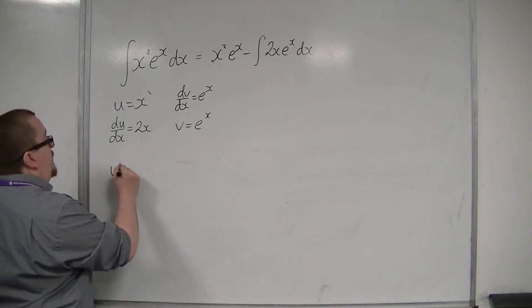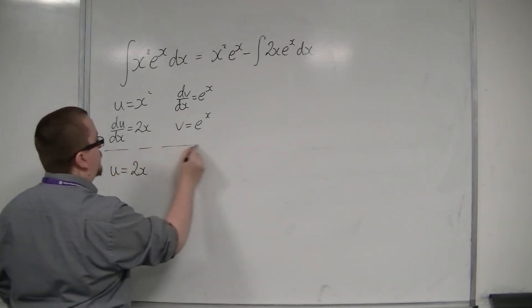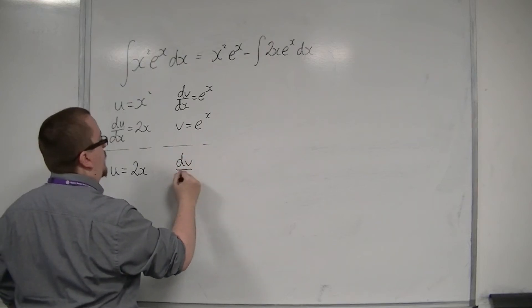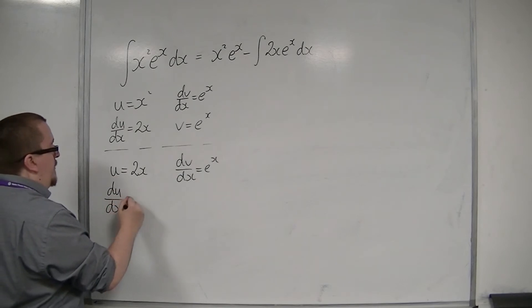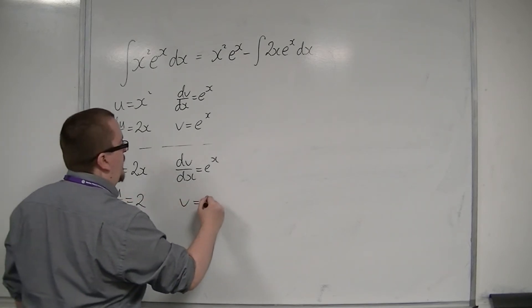So this time u is going to be 2x, and dv by dx will be e to the x. So du by dx is 2, and v is e to the x.